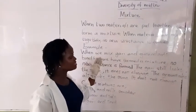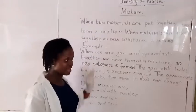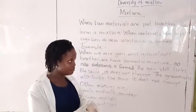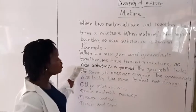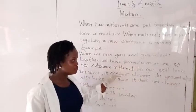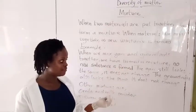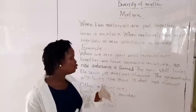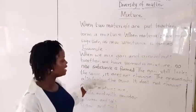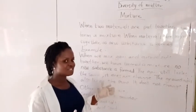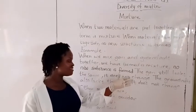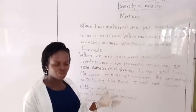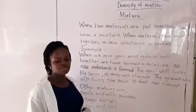When we mix galli and granul together, we have formed a mixture. No new substance is formed. So why is no new substance formed? Because the galli still looks the same — it does not change. And the granul also looks the same and does not change.